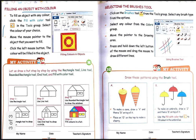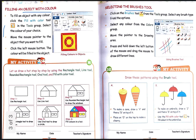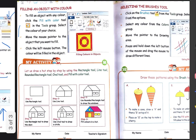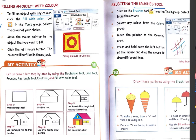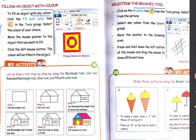First, to fill an object with any color — if you have to fill an object with any color, then what should you do? First, you have to click on the 'Fill with Color' tool in the tool group. There are many tools available in the tool group, so you have to find the one called 'Fill with Color.'